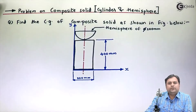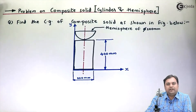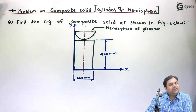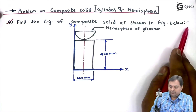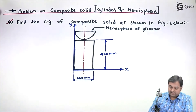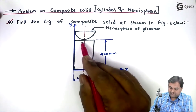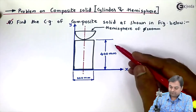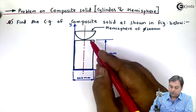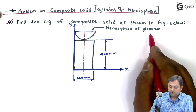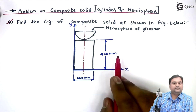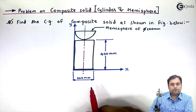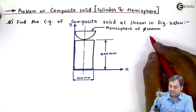In this video we will take the problem of center of gravity based on a composite solid, where we have a combination of cylinder and hemisphere. The question asks us to find the CG of the composite solid as shown in the figure. The cylinder has a base diameter of 200 mm and height of 400 mm, and over it a hemisphere is kept whose diameter is also 200 mm.